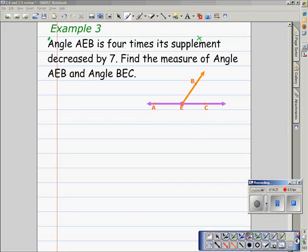We're told that angle AEB is four times its supplement decreased by seven. Since we're told a relationship about AEB, we'll let angle BEC, its supplement, equal X. We'll call that X.